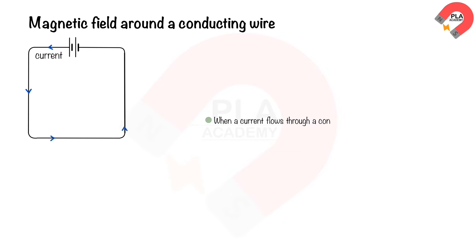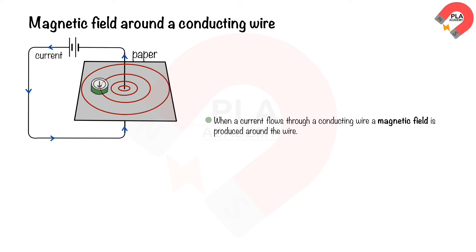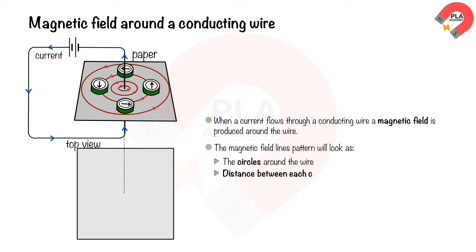Magnetic field around a conducting wire: when a current flows through a conducting wire, a magnetic field is produced around the wire. The shape and direction of the field can be investigated using plotting compasses, which produce circular field line patterns. As the distance from the wire increases, the circles get further apart, showing that the magnetic field is strongest closest to the wire and gets weaker with distance.